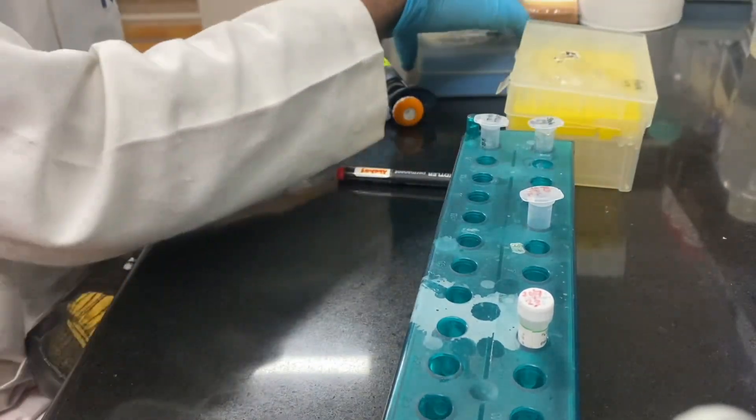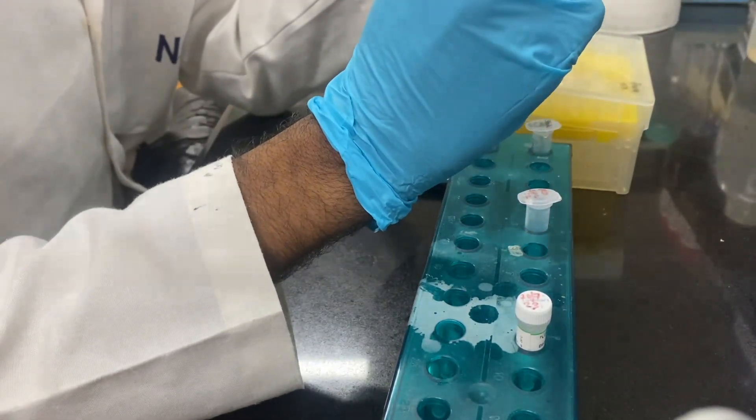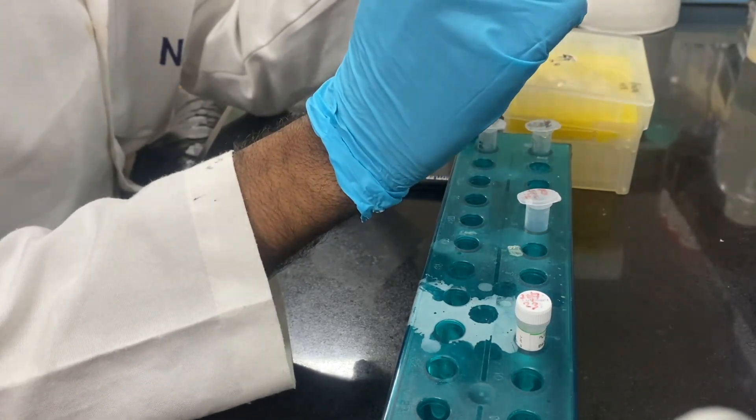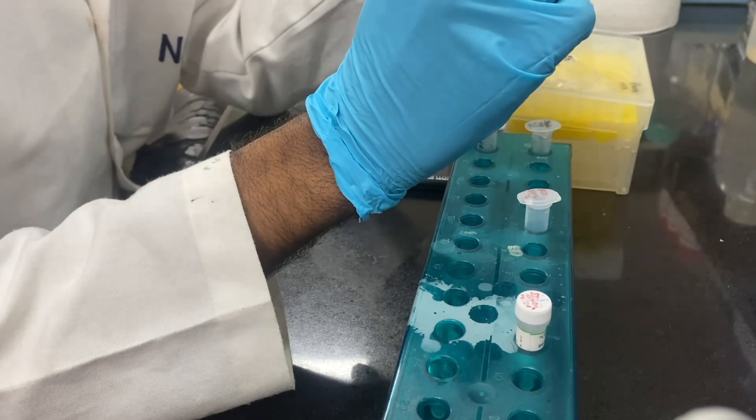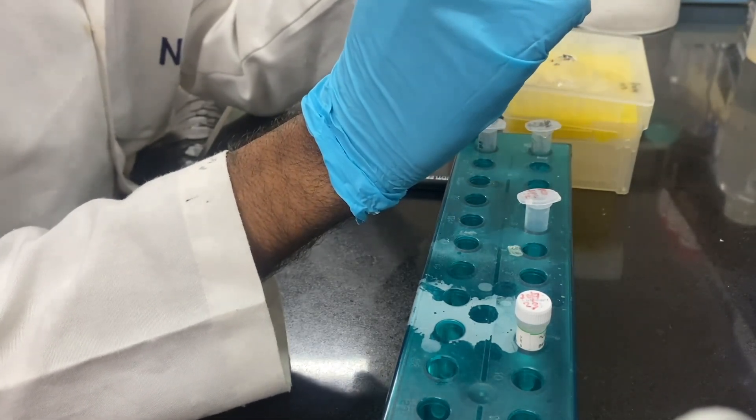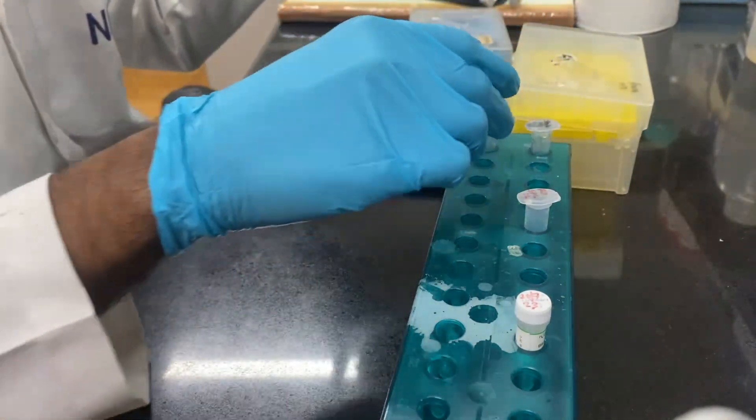Now we will add our plasmid DNA. The concentration of my plasmid DNA is around 188 nanogram per microliter. So for digesting one microgram I need around 5.4 microliter of plasmid DNA. We will add 5.4 microliter of plasmid DNA.